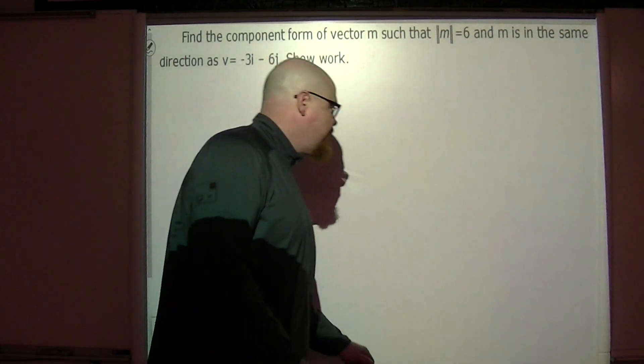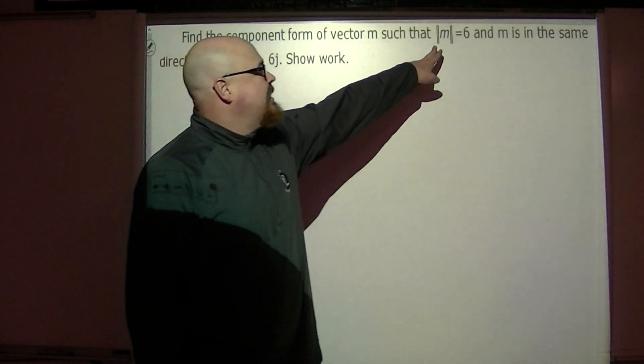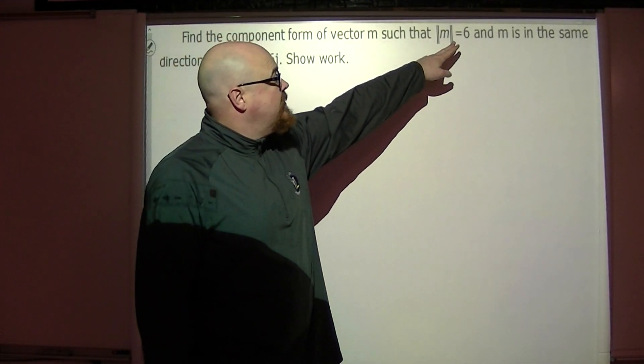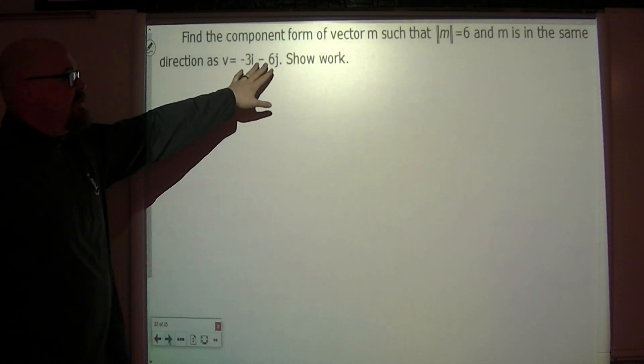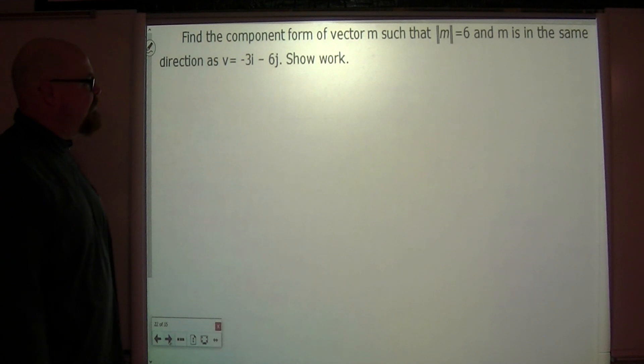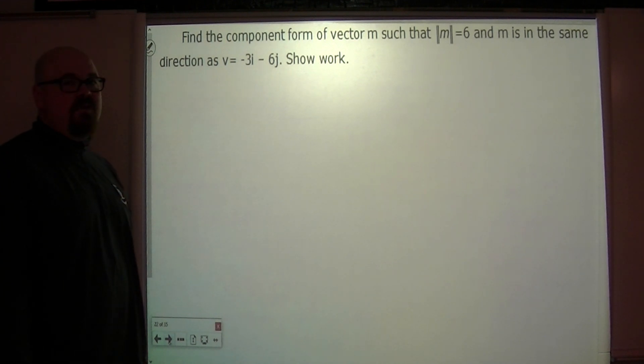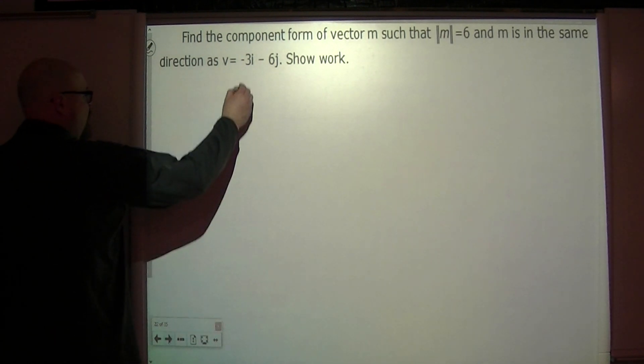Okay, here we go. This problem says find the component form of the vector m such that the magnitude of vector m is 6 and m is in the same direction as this vector v which has this linear combination form. What do you think the first thing we should do here is? Draw a picture, right?